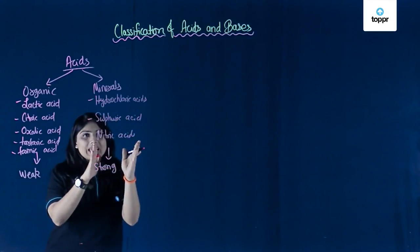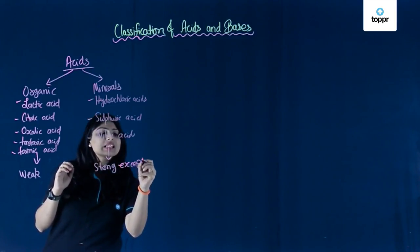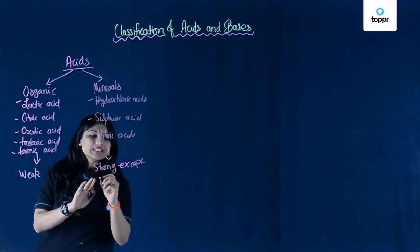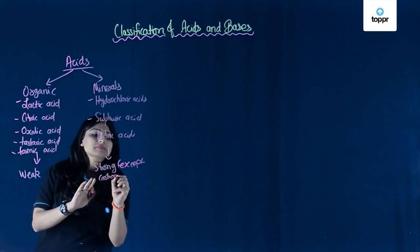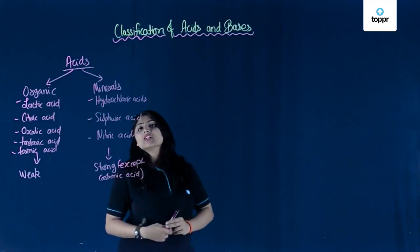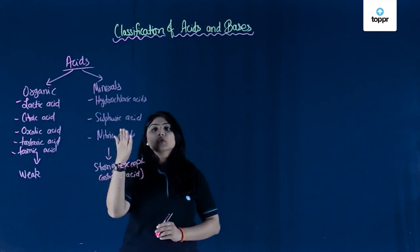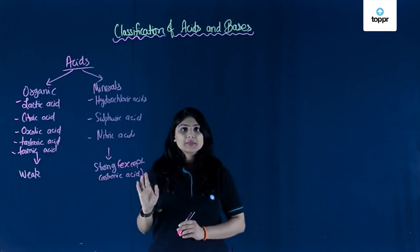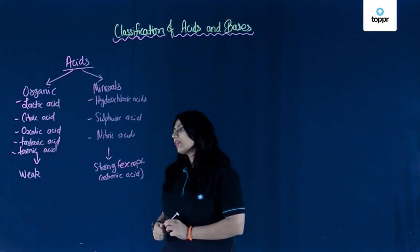Being a mineral acid, carbonic acid is still not strong. So except for carbonic acid, all mineral acids are strong. I hope you are clear with why we don't use hydrochloric, sulphuric, or nitric acid in our food — because they are not at all edible. They are very strong and very corrosive.